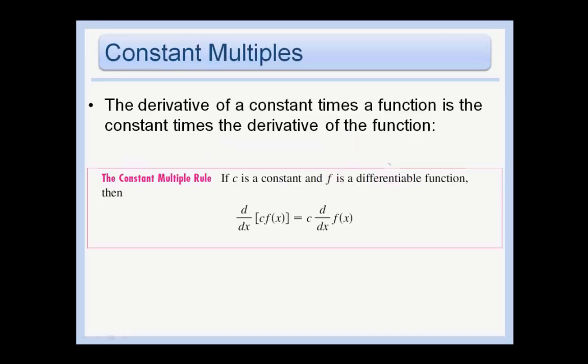Here we're just saying that the derivative of a constant times a function is the constant times the derivative of the function. Meaning d/dx of c times f(x) is equal to c times the derivative of f(x). We can take a constant out since it's not a variable.